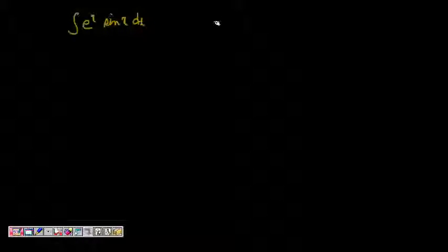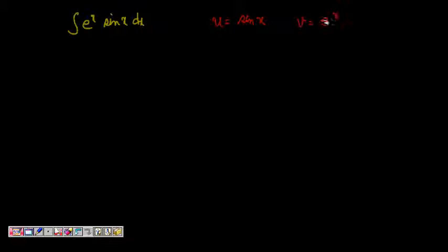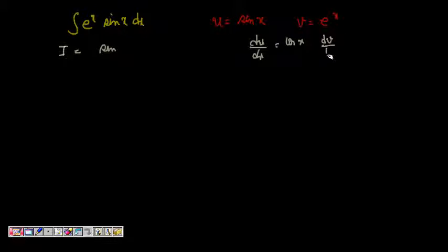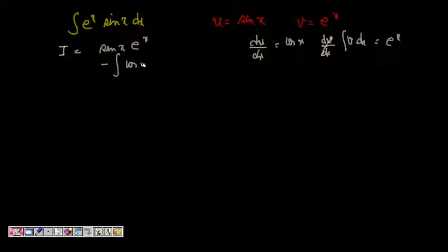Now let's try integral of e^x sin x dx. Here, let u = sin x and v = e^x. Since integrating e^x gives e^x, let's proceed. Computing: du/dx = cos x, ∫v dx = e^x. So I = sin x · e^x − ∫cos x · e^x dx. Let's call this remaining integral I₁.